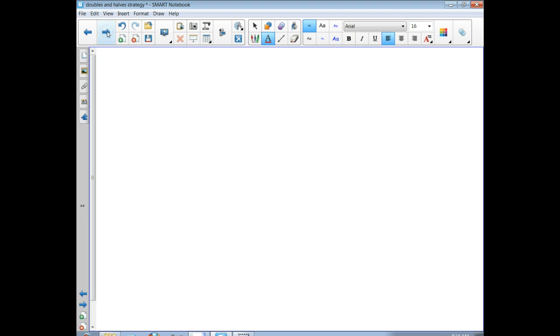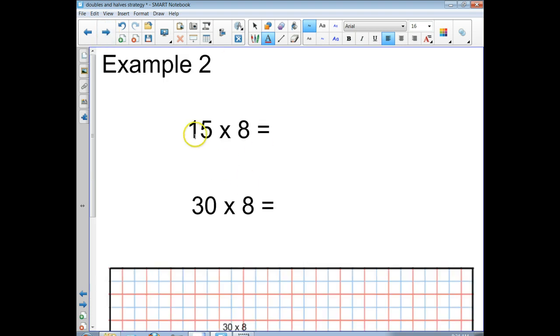All right, let's look at another one. So here we go, we've got 15 times 8 and we've got 30 times 8. Well, I know 30 times 8 is 240 because I know 3 times 8 equals 24, and then I add the 0 on the end because 30 is a multiple of 10.